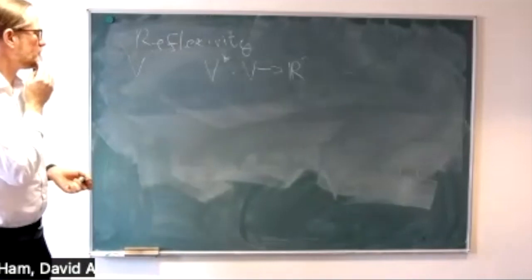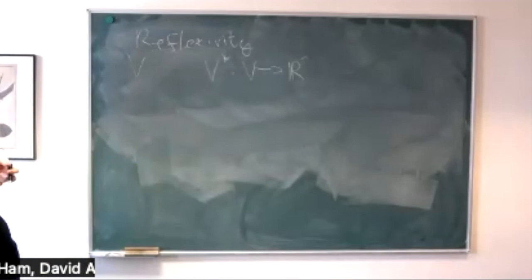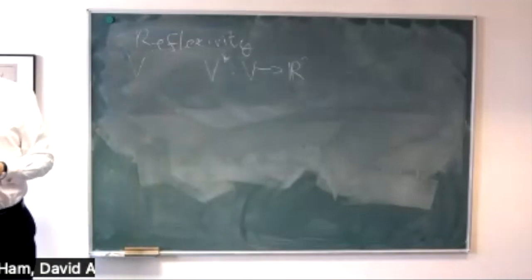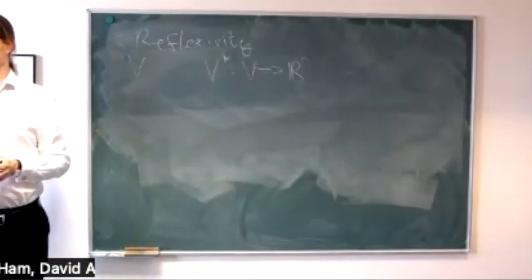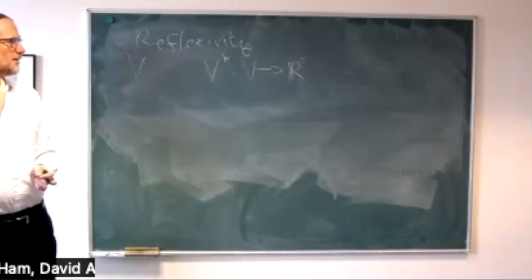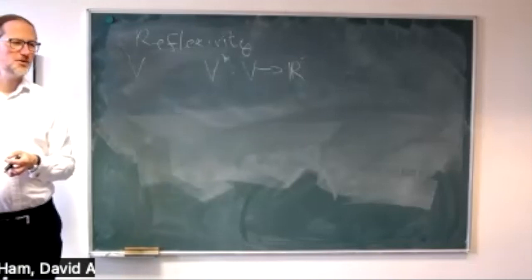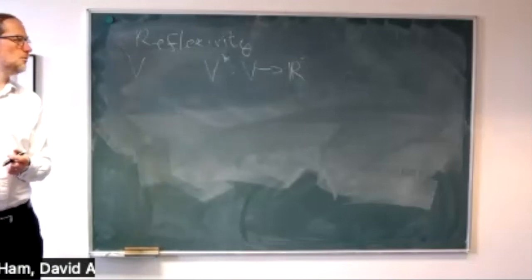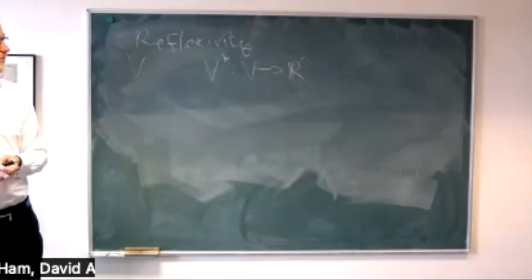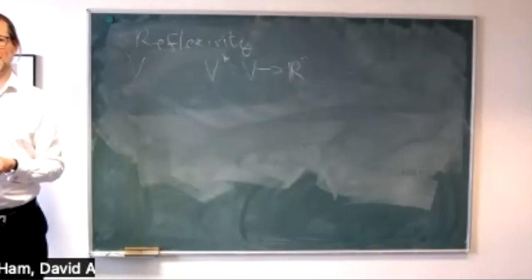V* is another Hilbert space — the Hilbert space with the dual norm on it. If you think in concrete terms, the way you get the dual norm is you take the Riesz representatives to get back into the primal space and then take the primal norm.